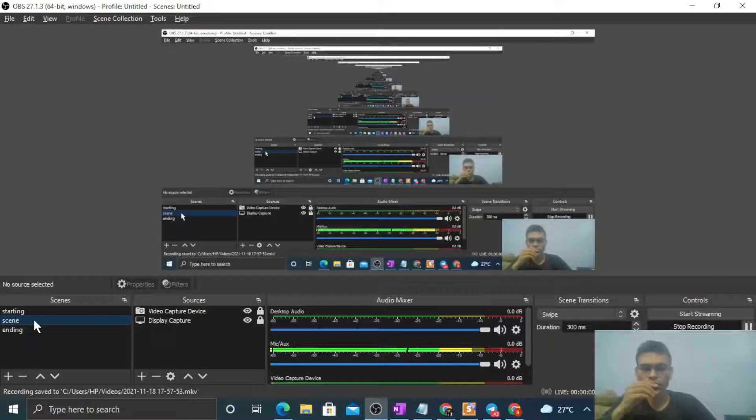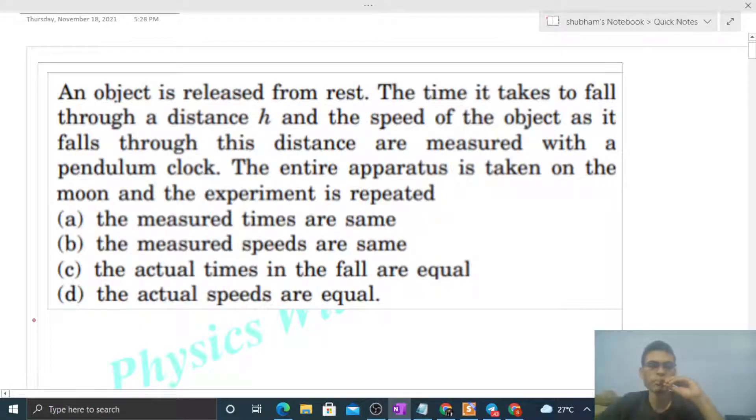Okay, hi everyone. Today let's discuss this interesting problem. It says an object is released from rest, the time it takes to fall through a distance h and the speed of the object as it falls through this distance are measured with a pendulum clock. The entire apparatus is taken on the moon and the experiment is repeated.